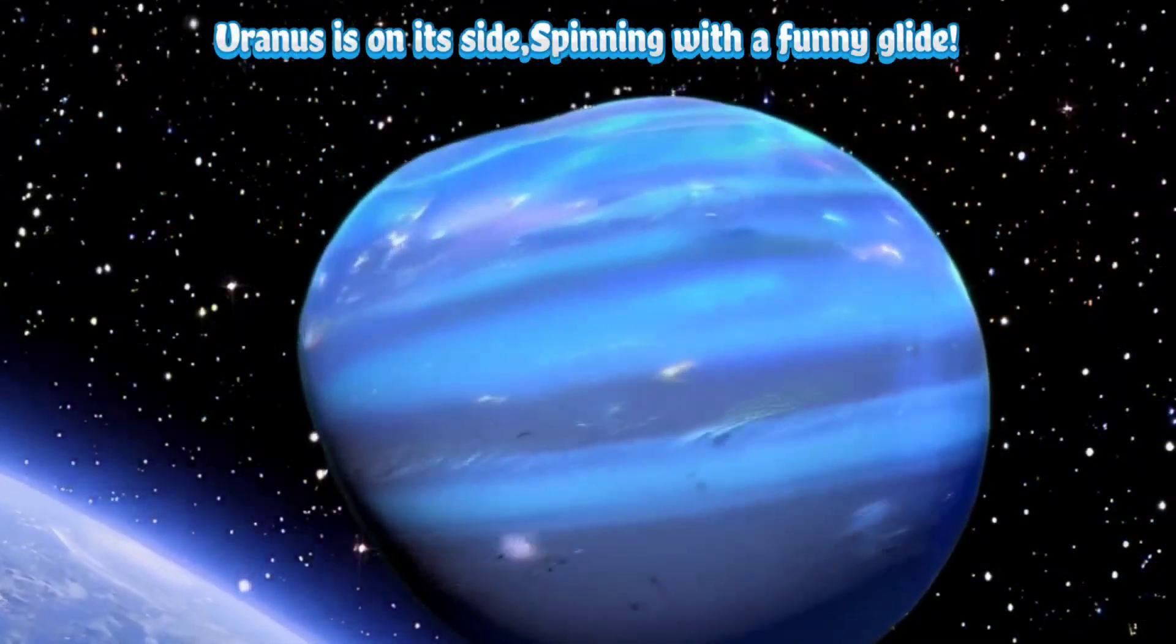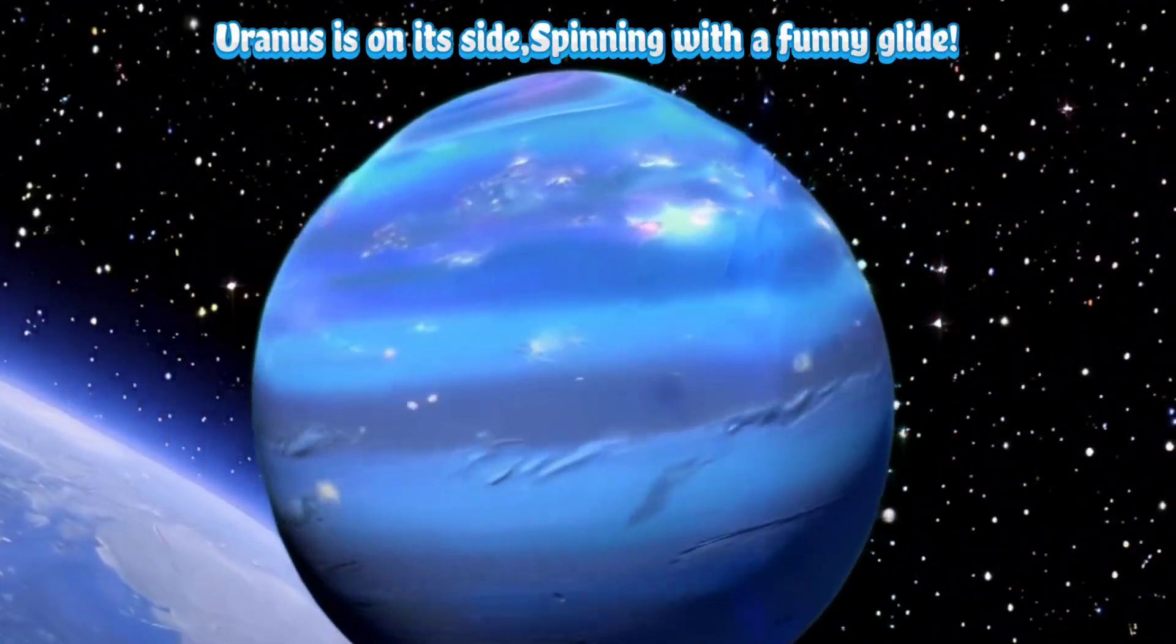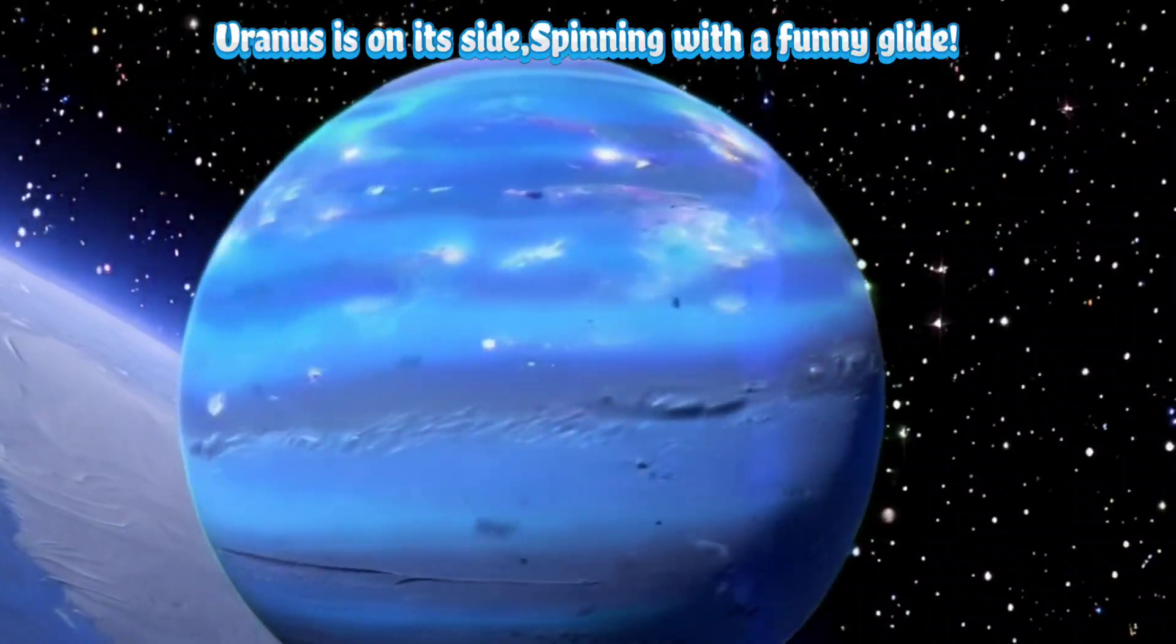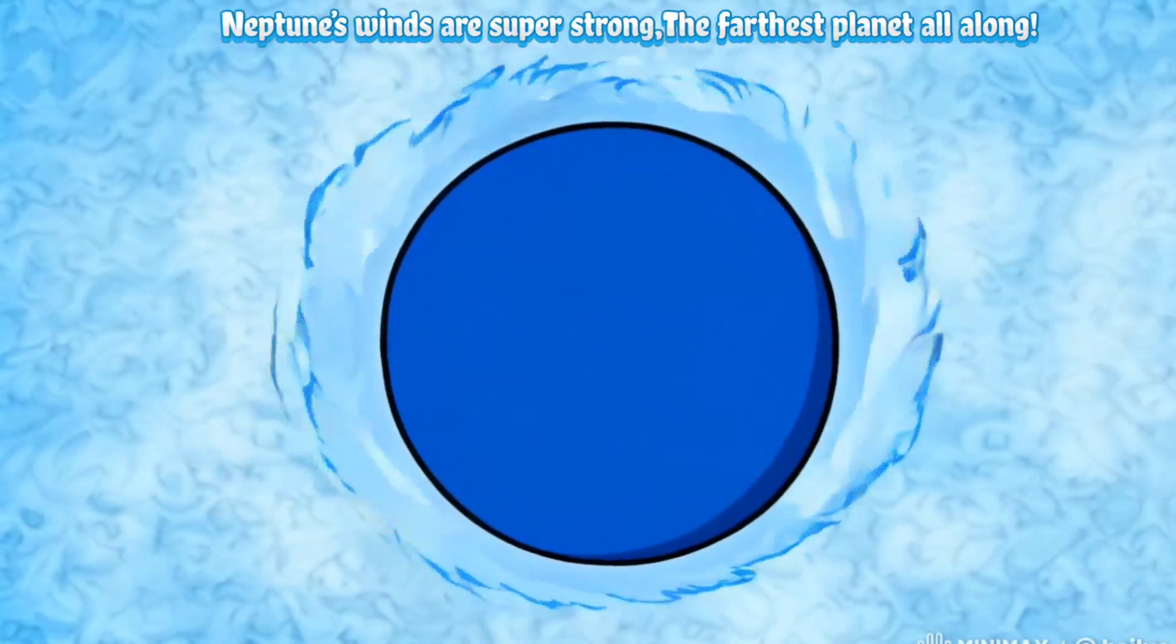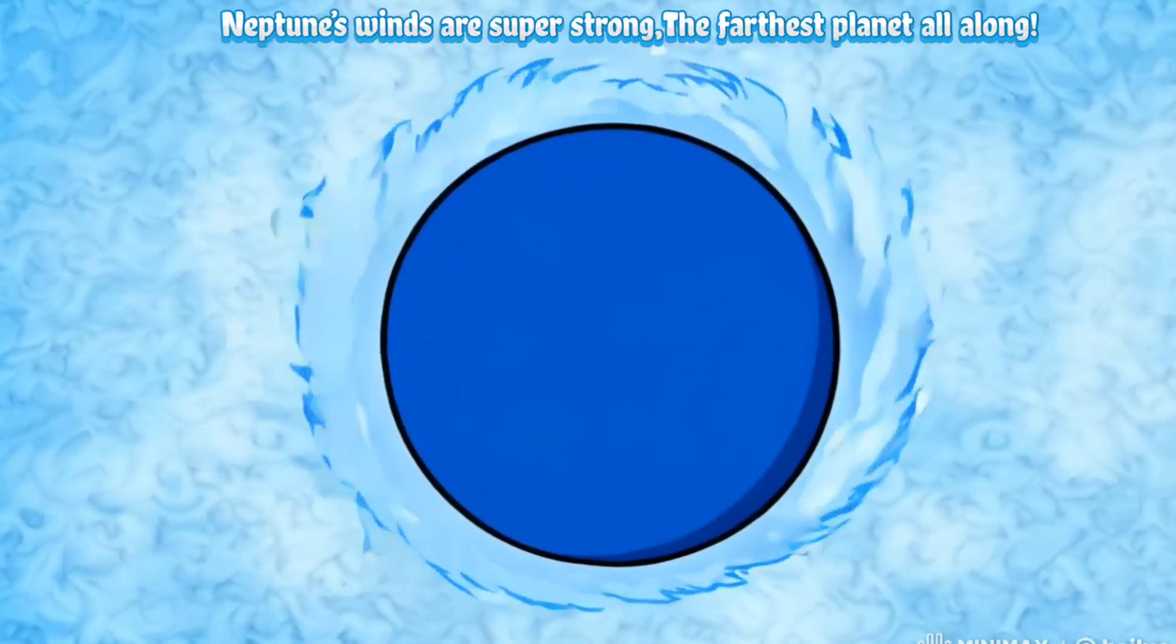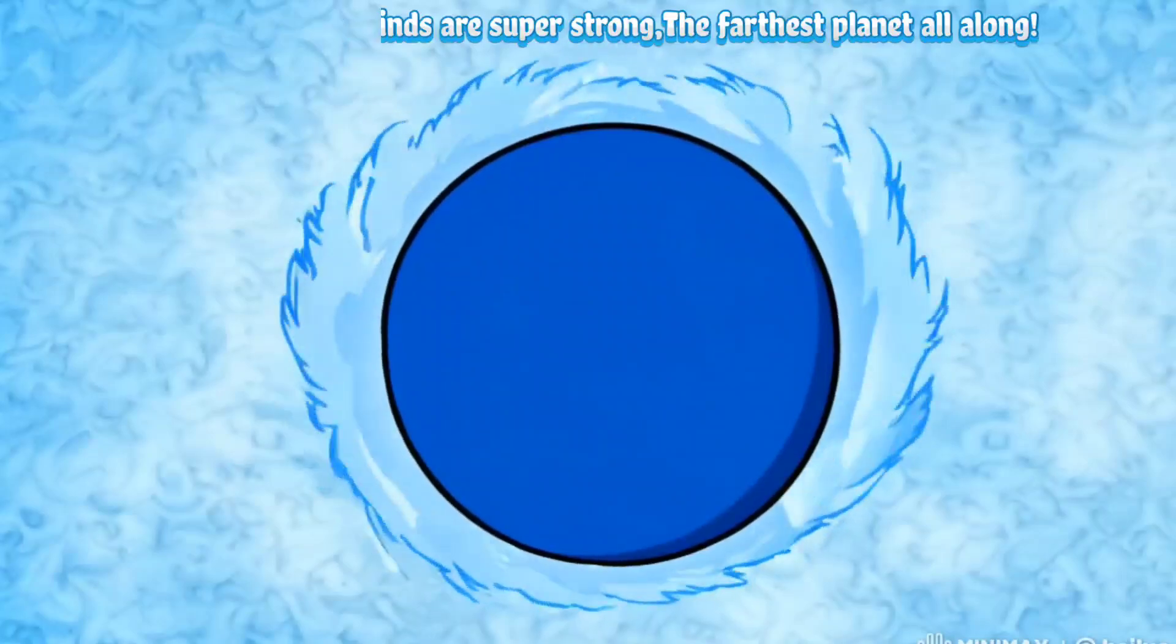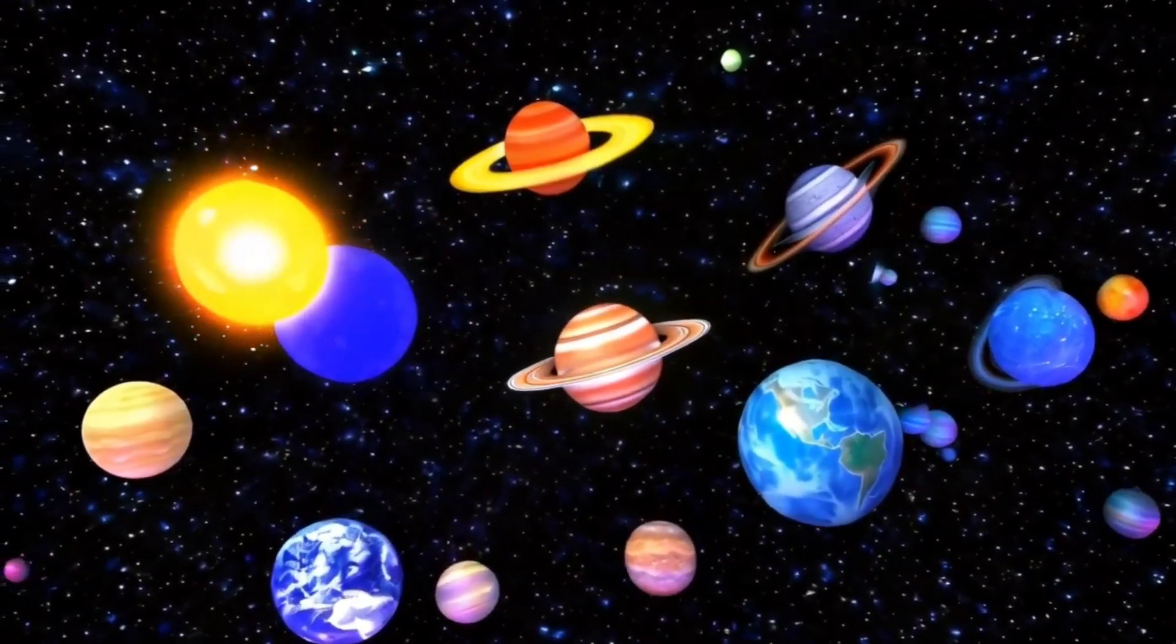Uranus is on its side, spinning with a funny glide. Neptune's rings are super strong, the farthest planet all along.